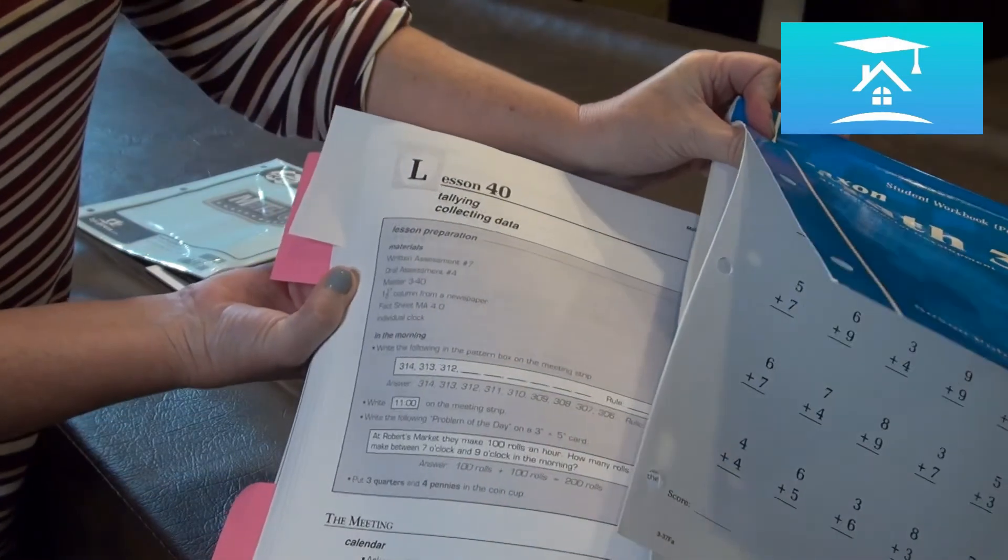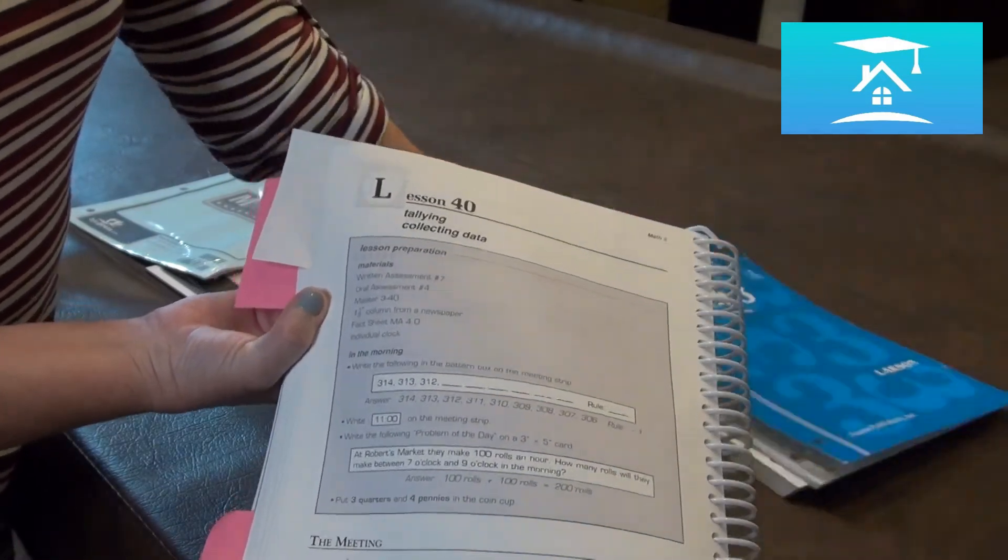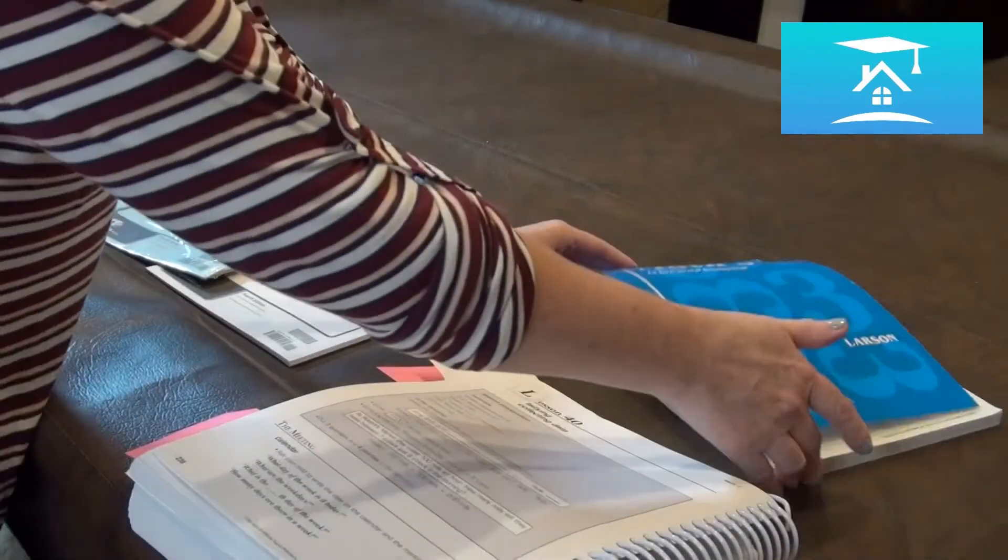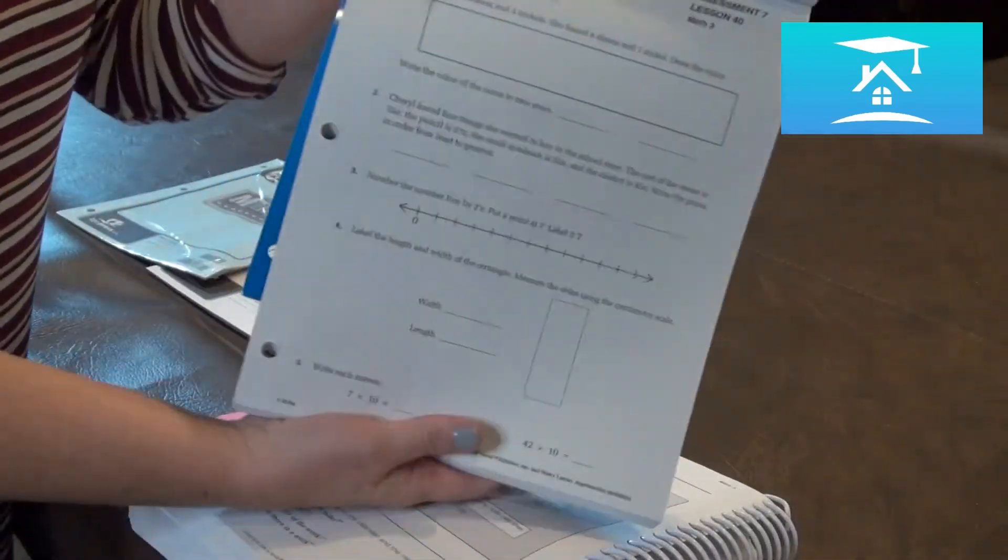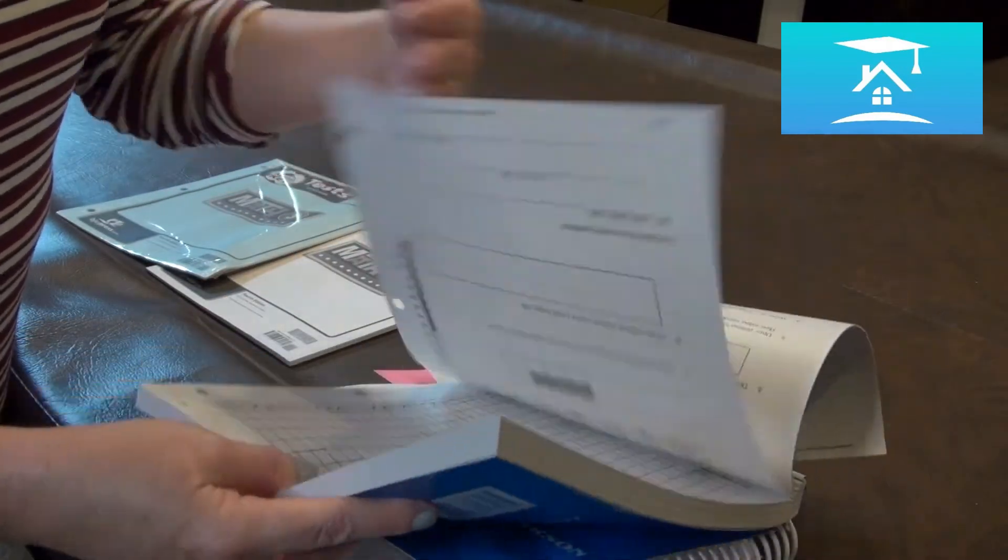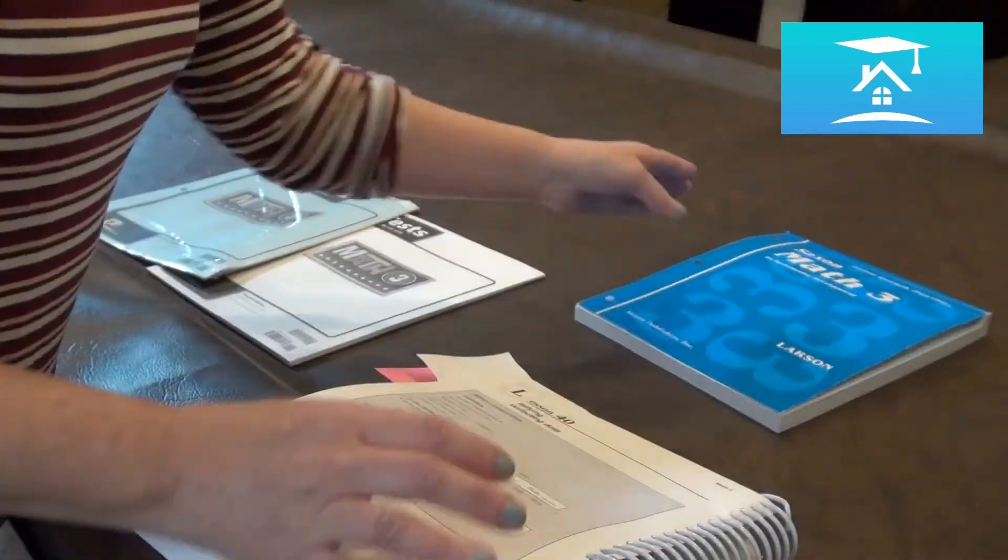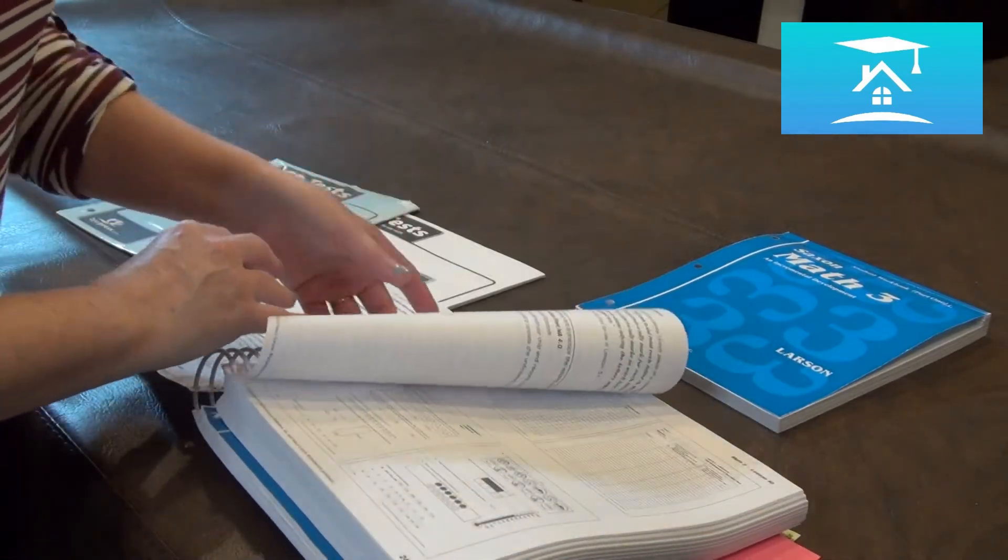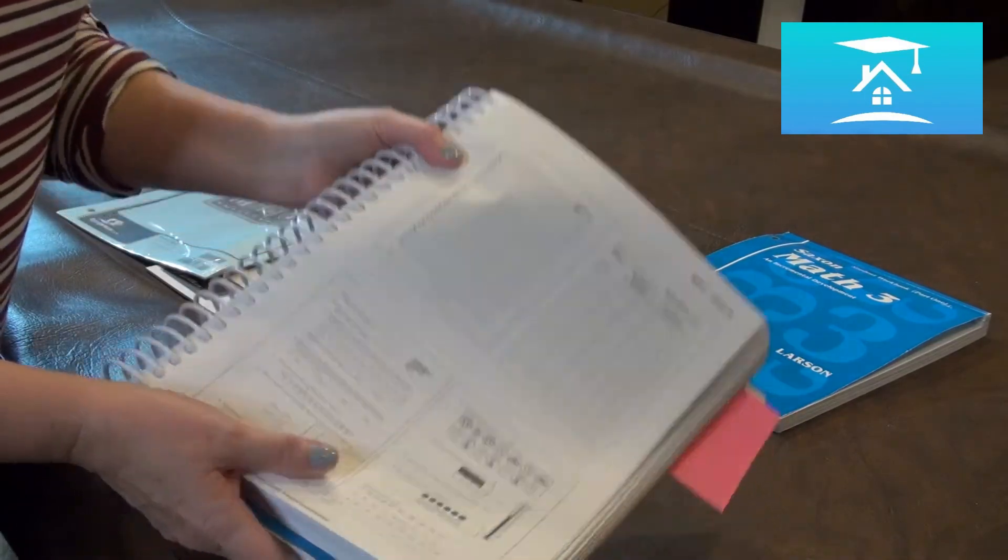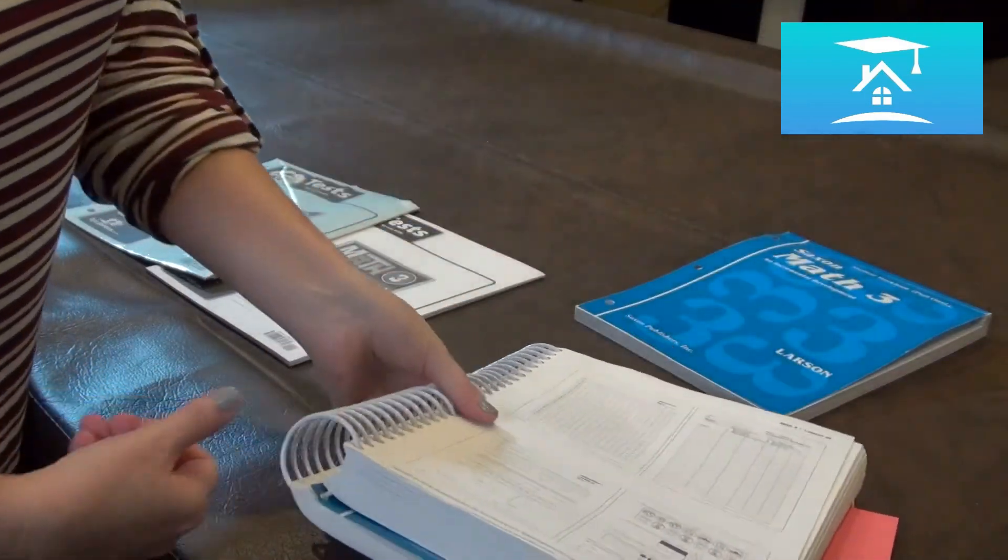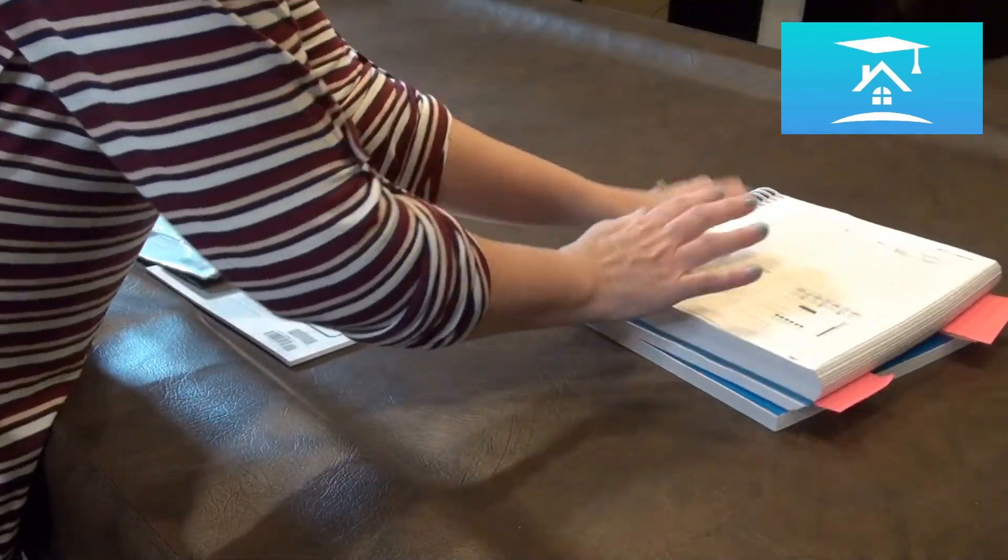So here, like for example, lesson 40 tells you that the written assessment is going to be written assessment number seven. So you would flip and this is where you would find it front and back. And then you can also find how to score your assessments. It's in the, at the end of that very same lesson plan. You're at the end. Okay. So that is how testing and assessment is handled in SACS.